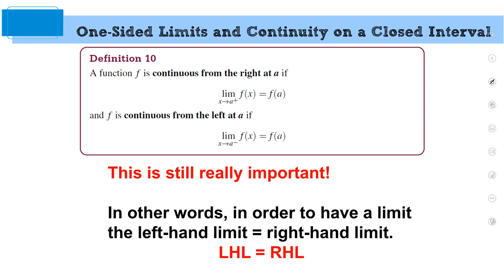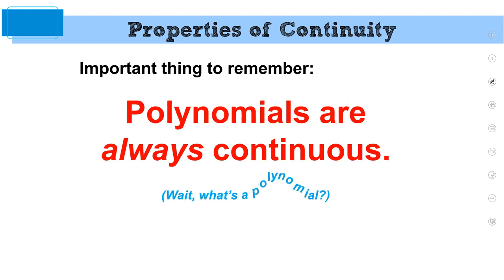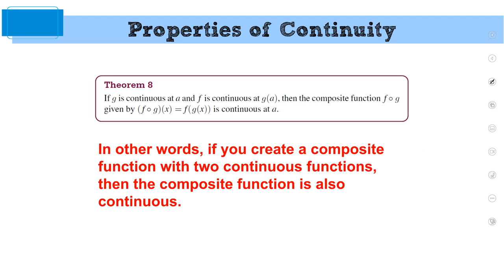The left-hand limit has to match the right-hand limit — quick review. Now to make your life a lot easier: if you add, subtract, multiply, or divide continuous functions, it stays continuous. Add two continuous functions — the sum is continuous. Subtract two continuous functions — it's continuous. Multiply by a constant — you still have a continuous function. The same is true with composite functions: a continuous function inside a continuous function stays continuous.